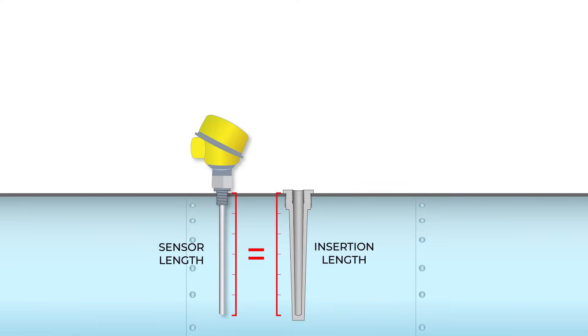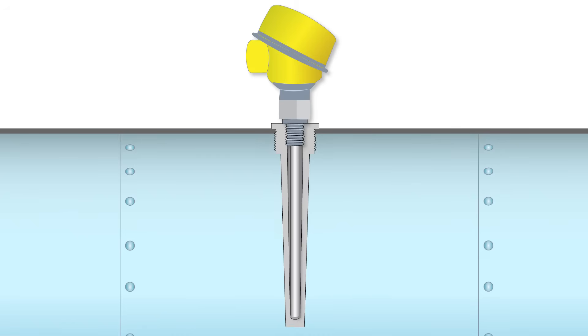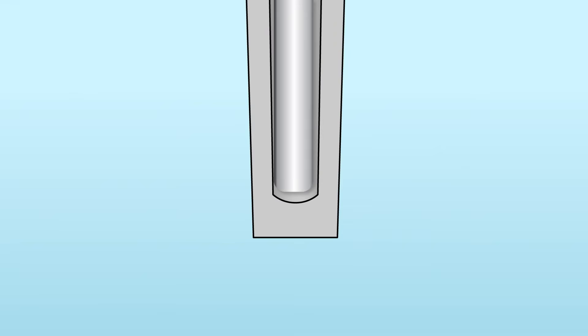A temperature sensor equal in length to the thermal well's insertion length is inserted into the thermal well opening on the outside of the pipe or tank using the entire insertion length of the thermal well. The tip of the temperature sensor must be within close proximity to the bottom end of the thermal well for best results.